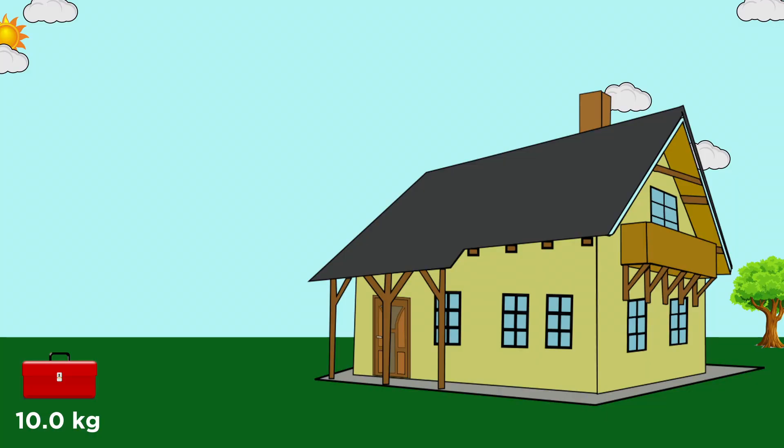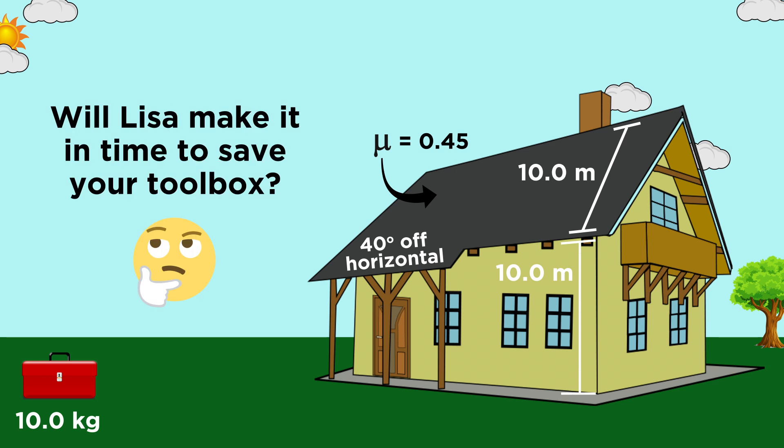The toolbox has a mass of ten kilograms. The distance from the top of the roof to the edge is ten meters. The roof is angled at forty degrees off the horizontal, and is ten meters off the ground, and the coefficient of friction of the roof is zero point four five. Given all this information, will she make it out in time to catch the toolbox?